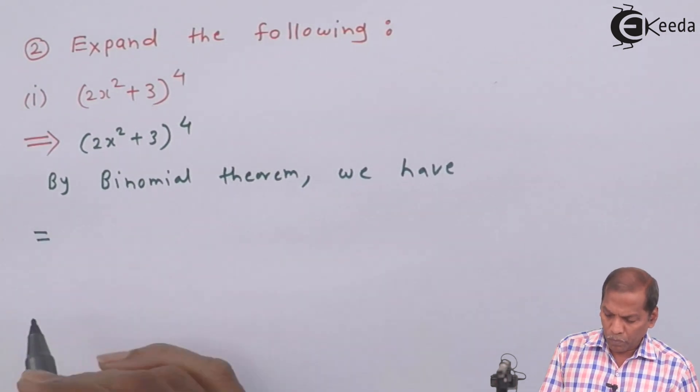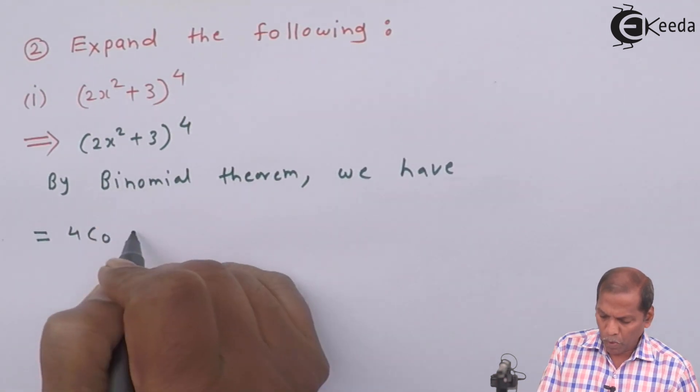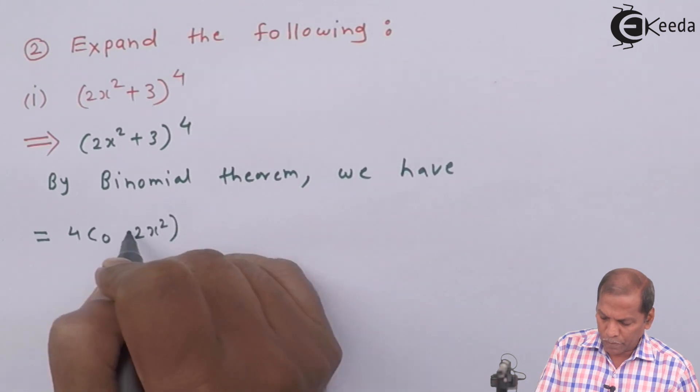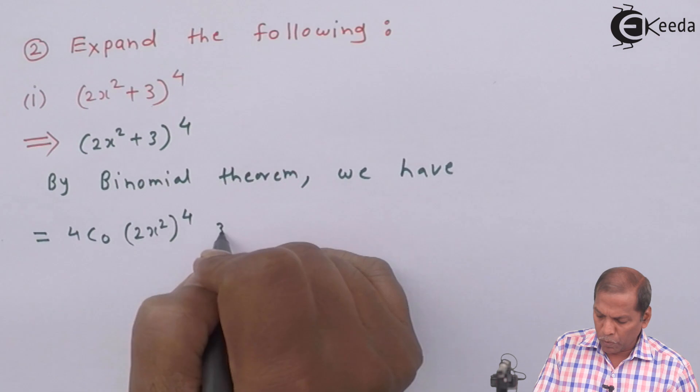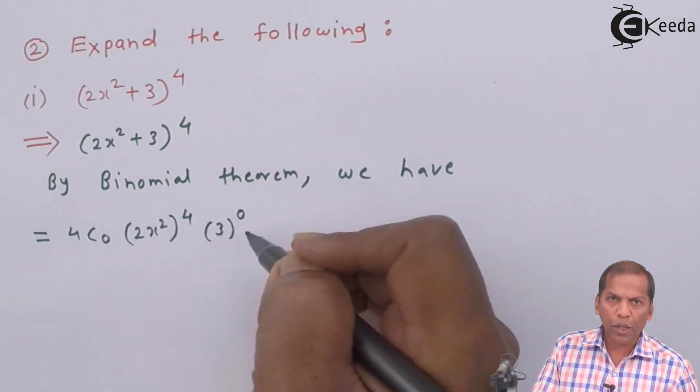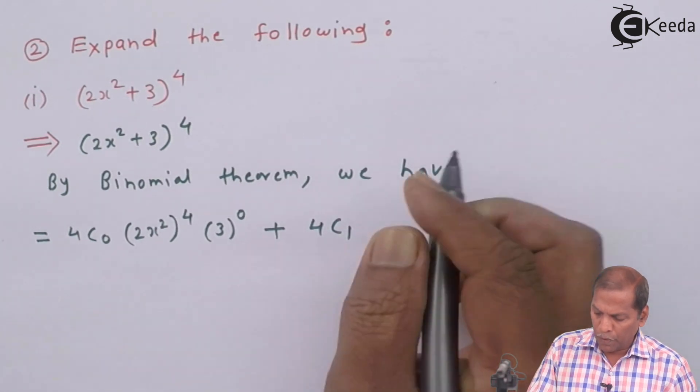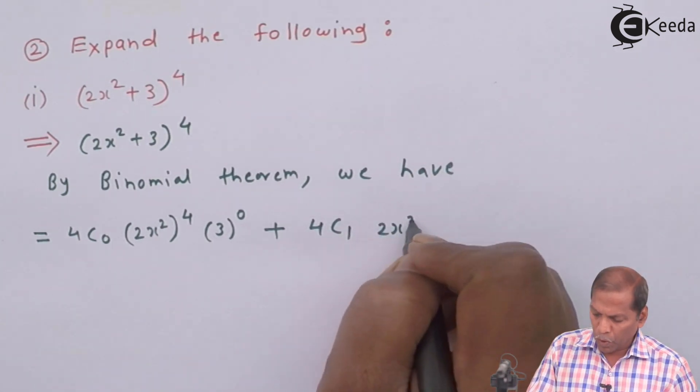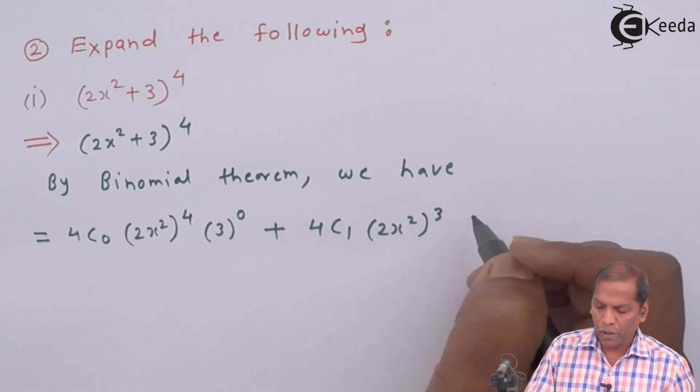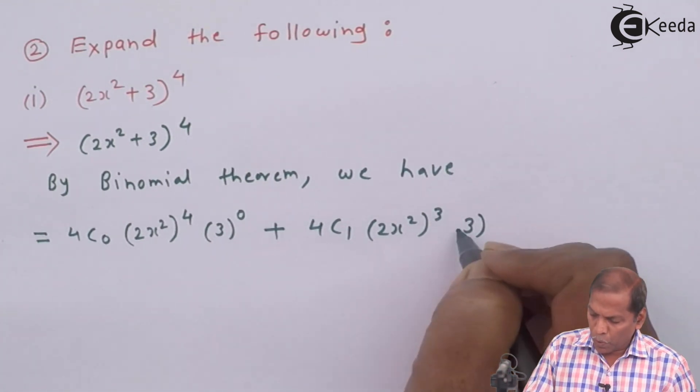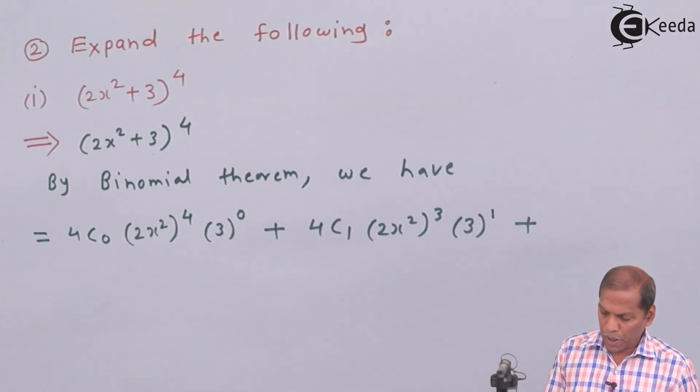is equal to ⁴C₀(2x²)⁴(3)⁰ + ⁴C₁(2x²)³(3)¹ plus